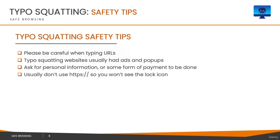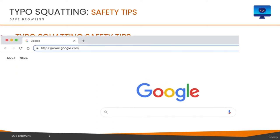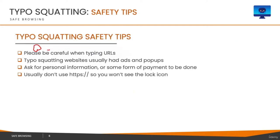Another thing to look out for is that many typo squatting websites do not have SSL certificates installed, so they do not use HTTPS. You won't see the 'S' after HTTP and you won't see the lock icon — usually your browser will show a warning. That's a good indication it may be a bad or unsafe website. Finally, the best tip: if you're in doubt, call the official helpline. The IT support staff can send you a link via email or clarify anything unusual you're seeing on their website.